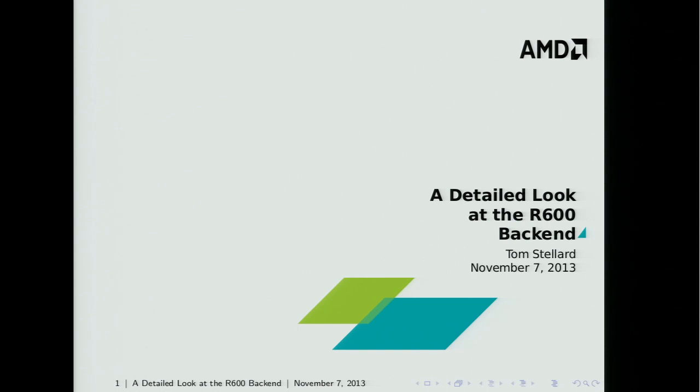I'm Tom Stellard. I'm a developer at AMD in the Embedded Solutions division, and I work on our open source GPU drivers. My primary focus is OpenCL, and I also work on the shader compiler for our OpenGL drivers. Today I'm going to talk about the R600 backend, which is something I've been working on for two years now, and it's been in-tree for about one year.